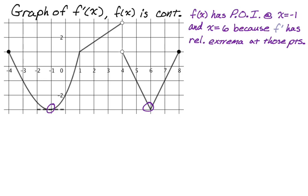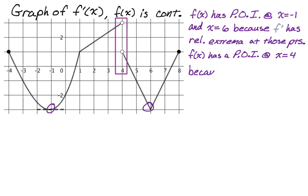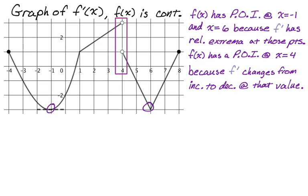There's actually another point of inflection represented on this graph. If you look here, the graph of f prime changes from increasing to decreasing — it's a very weird spot on the graph, but that's definitely a sign change for f double prime. So f of x has a point of inflection at x equals four because f prime changes from increasing to decreasing at that value. I could have said f of x has points of inflection at negative one, four, and six because f prime changes from increasing to decreasing or decreasing to increasing at those values — that also would have been a good solution.